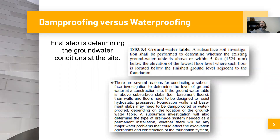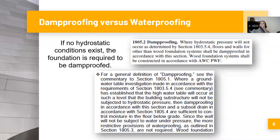The first step is determining the groundwater conditions at the site. Do you have a high water table, a low water table, is it seasonal? This section of the code requires a subsurface soil investigation — also known as a geotechnical report or geotech report — where they drill the soils at the site to determine, among other things, groundwater table levels. The criteria is to determine whether the existing groundwater table is above or within five feet below the elevation of the lowest floor level.